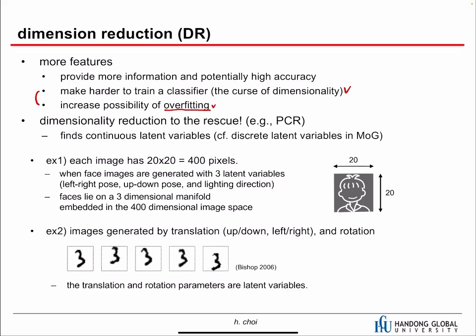Dimensionality reduction doesn't use all the features. It reduces the dimension first — say from 1,000 features down to 10 — and then we build a classifier or machine learning algorithm based on that 10-dimensional space instead of the 1,000-dimensional space. It finds continuous latent variables: the 10-dimensional space in this example is the latent space, while the 1,000-dimensional space is where our data samples actually exist.